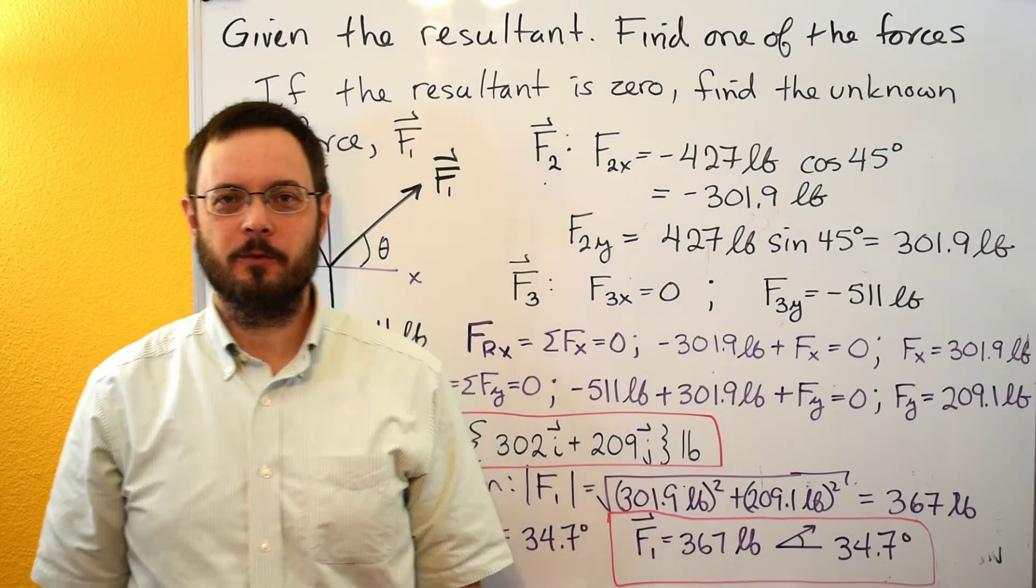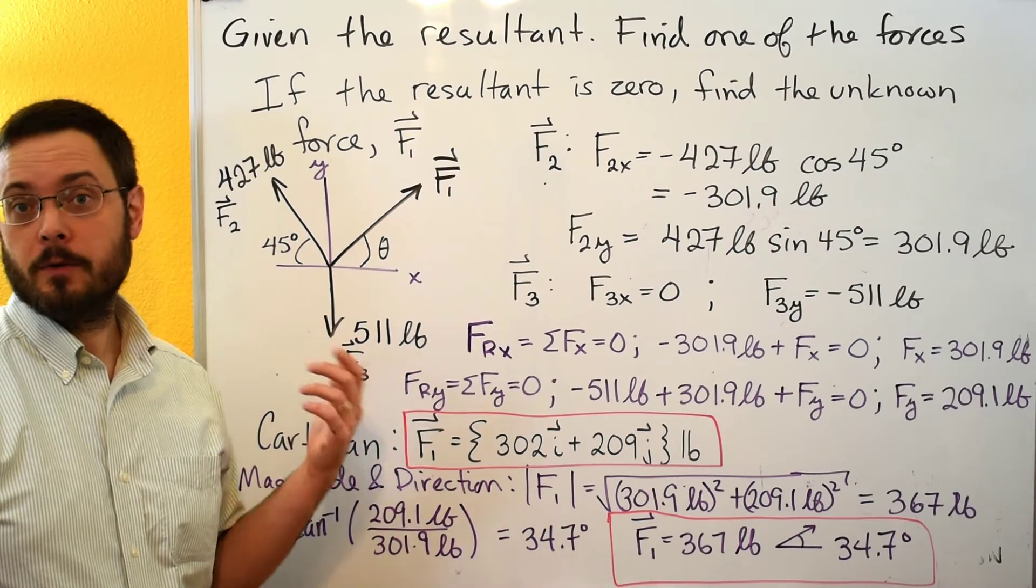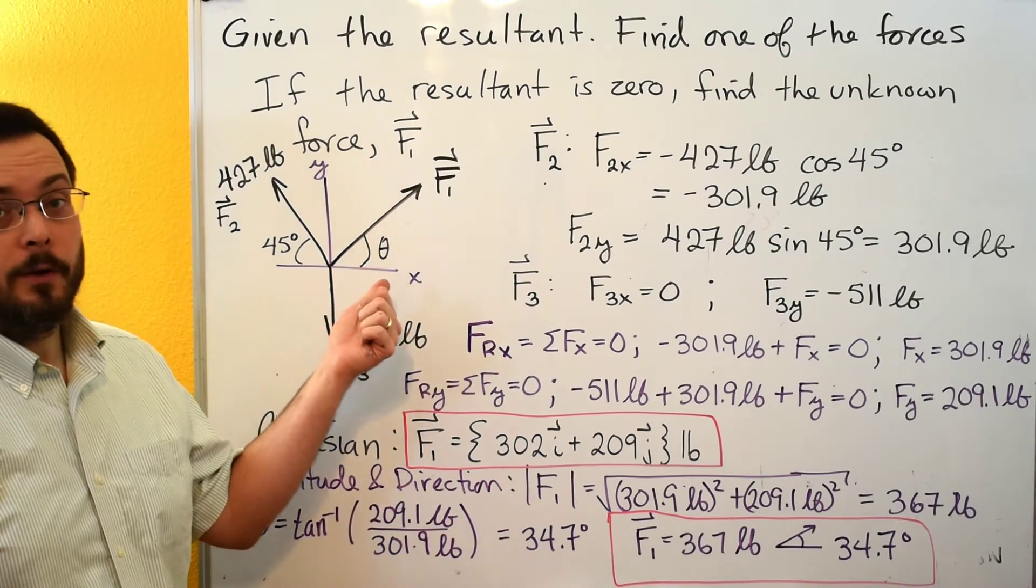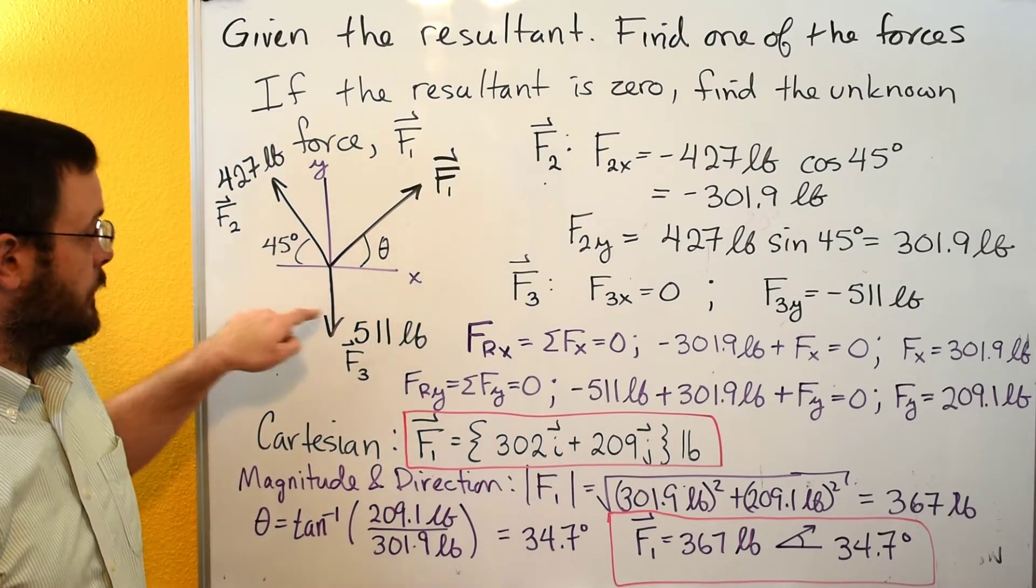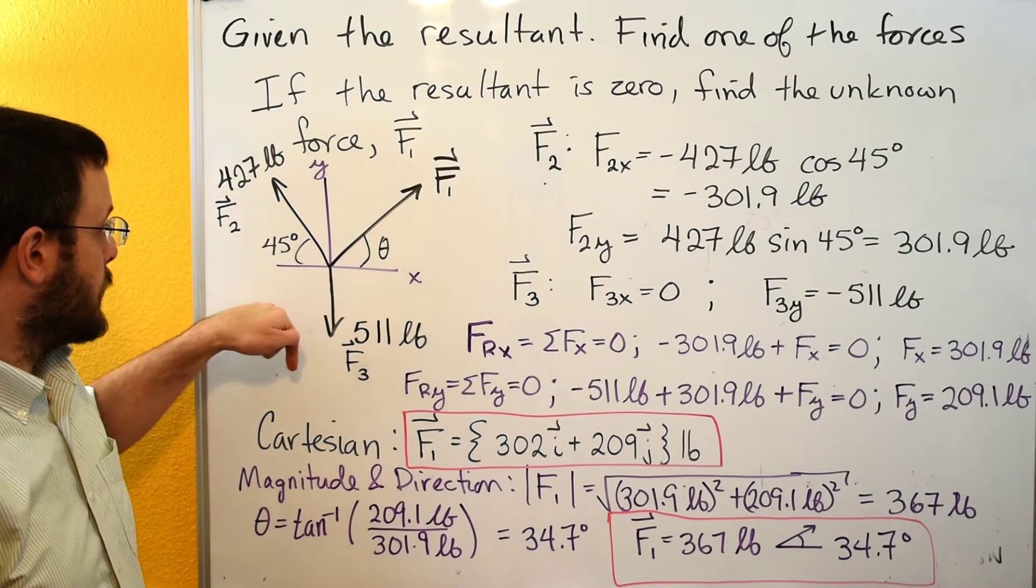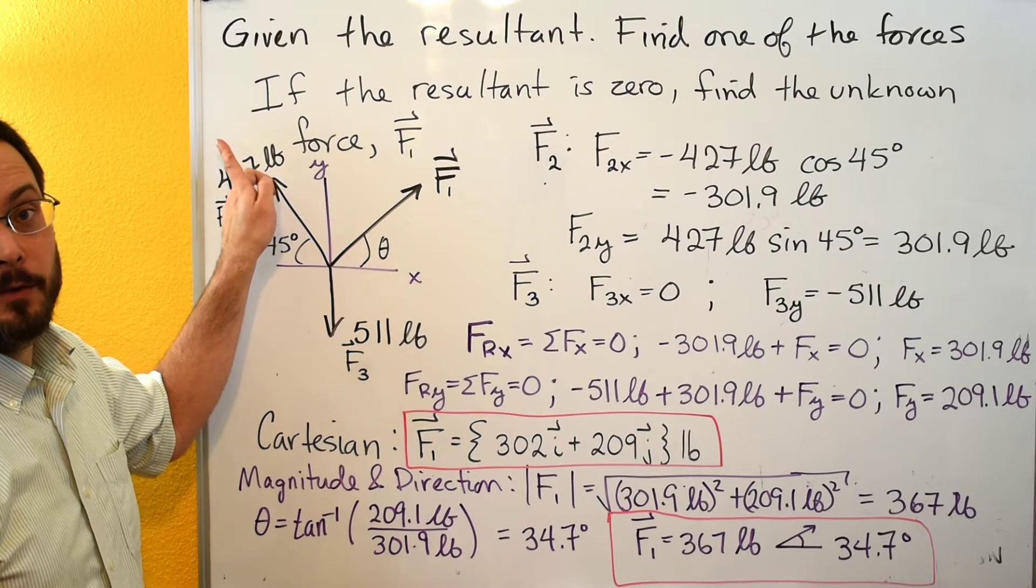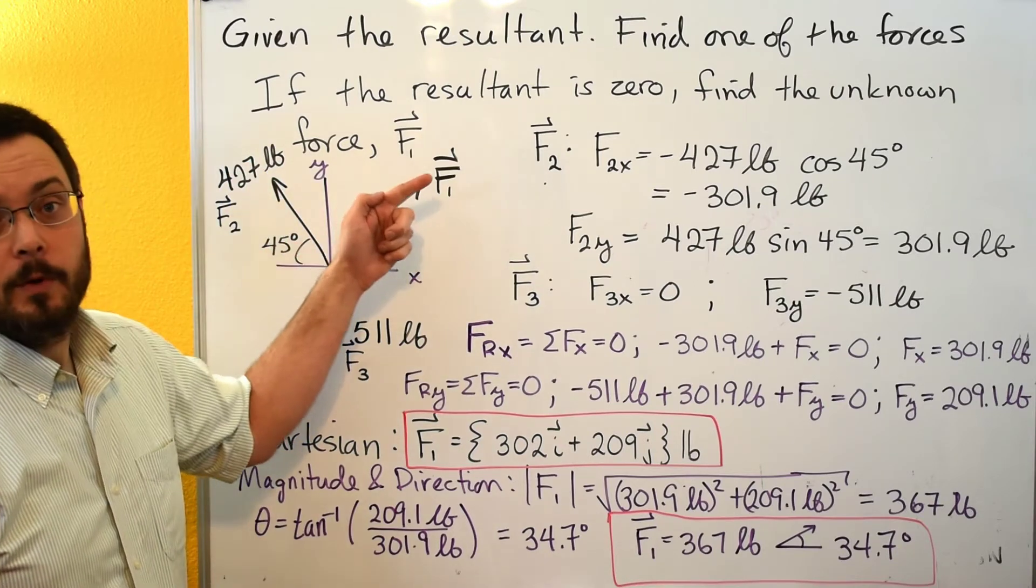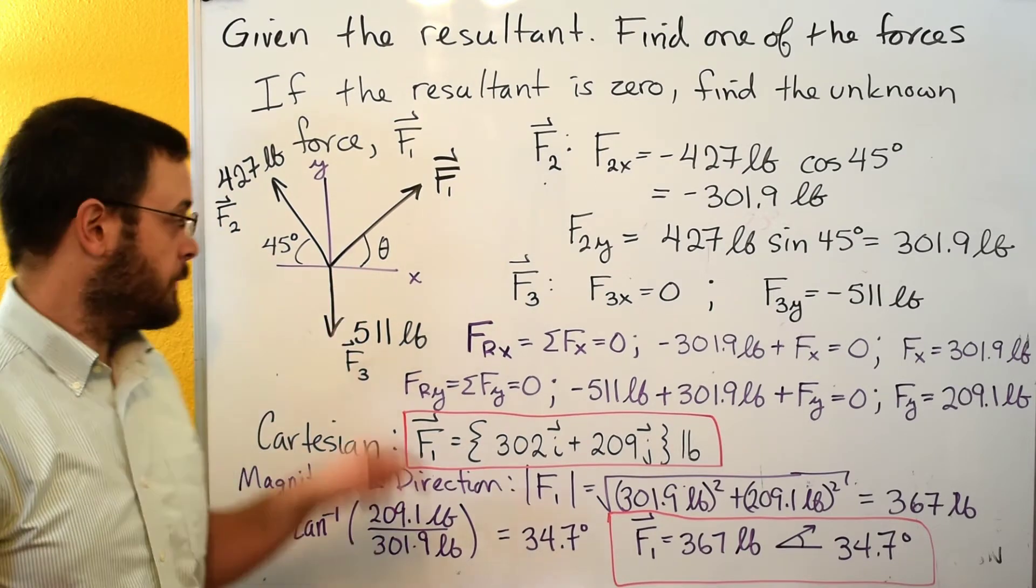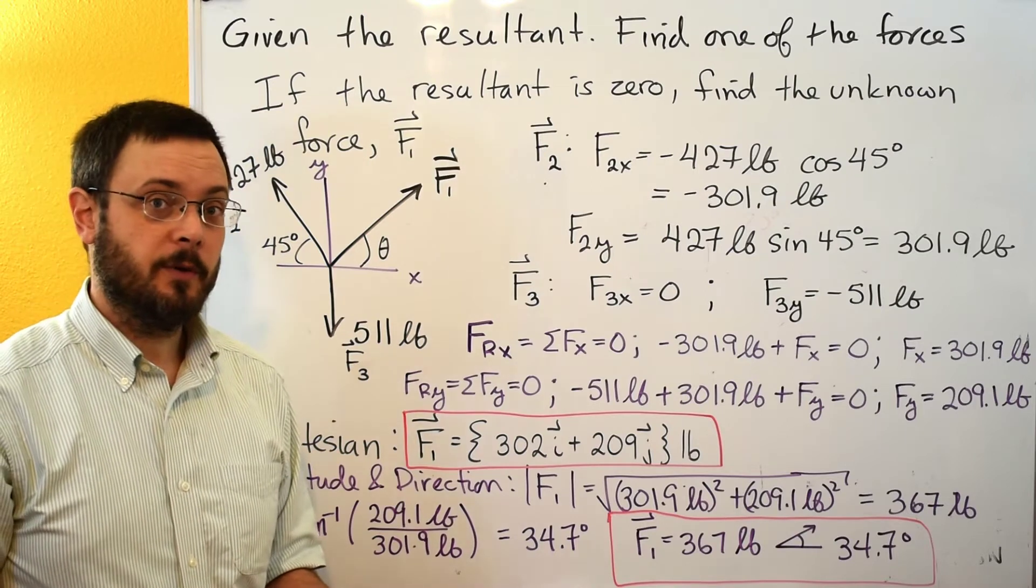Hi, welcome to the statics tutorials. In this video we're going to have a resultant, but the resultant is going to be known and one of the components that's adding up to the resultant is unknown, and we need to solve for that unknown component. In this case we have three vectors acting on a single point. We know this vector is 511 pounds straight down in negative y. We know this vector is 427 pounds at an angle of 45 degrees to the negative x-axis, but we don't know this vector. We don't know its magnitude and we also don't know its direction. But we do know that the resultant of these three vectors is zero, so now we can solve for F1.